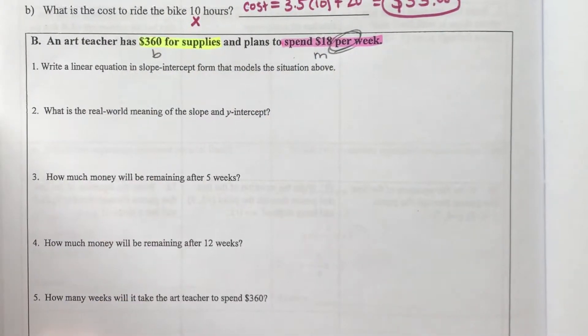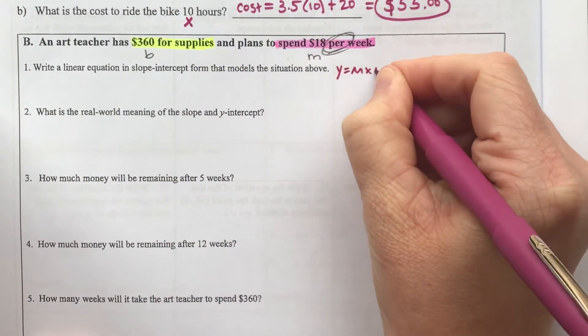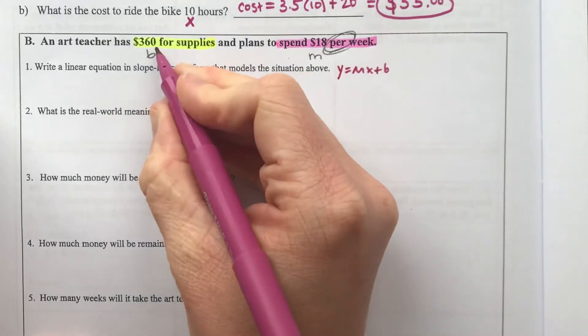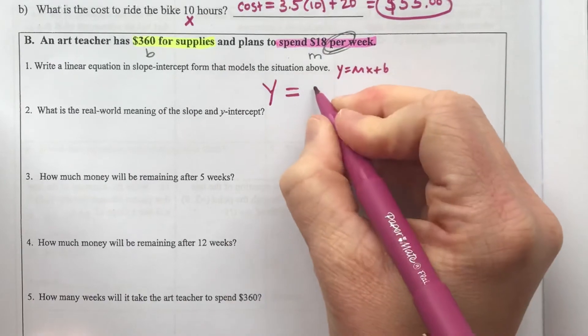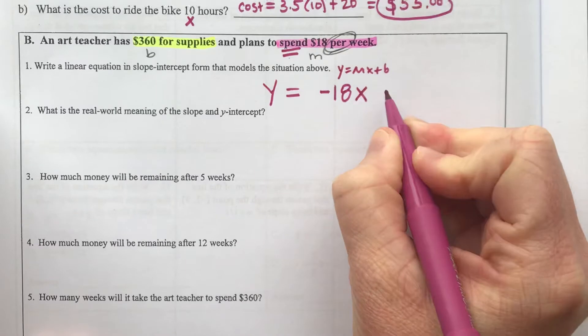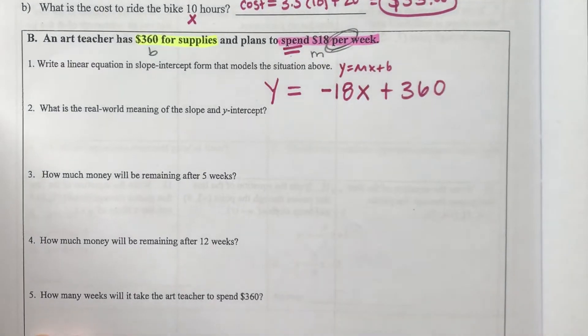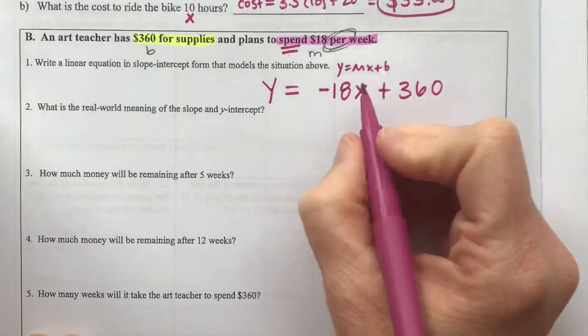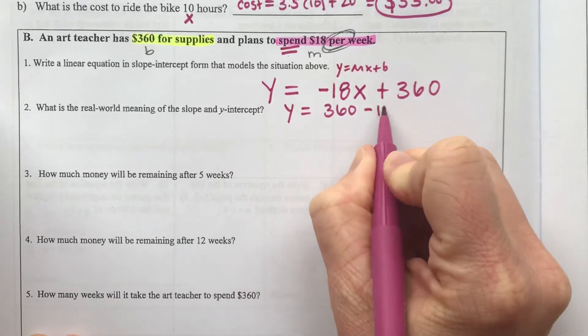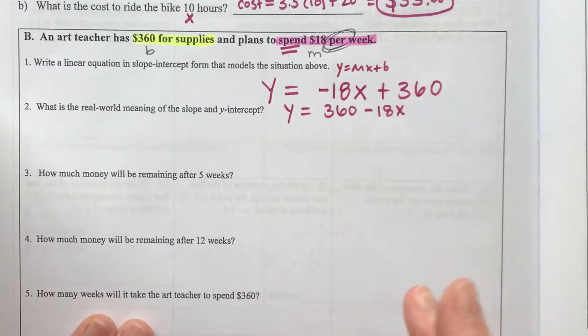We start with $360, so our function in y = mx + b form would be y = -18x + 360. Since we're spending money, we want negative 18 per week, plus we started with $360. You may have written it as y = 360 - 18x, which would also be correct. Either way, these are both the same equation.